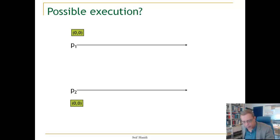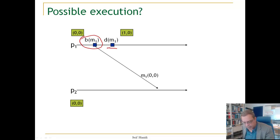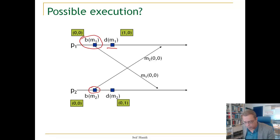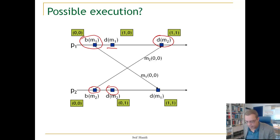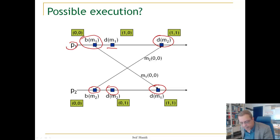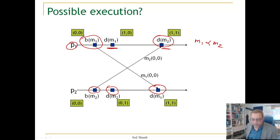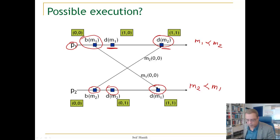Let us look at this execution. P1 broadcasts a message M1, which is delivered here. P2 broadcasts a message M2, which is delivered here. The message M2 is delivered at P1, and the message M1 is delivered here. If we look at the delivery of these messages, we see that at P1, delivery of M1 is before M2, whereas at P2, delivery is M2 before M1. So the question is, is something wrong with this?